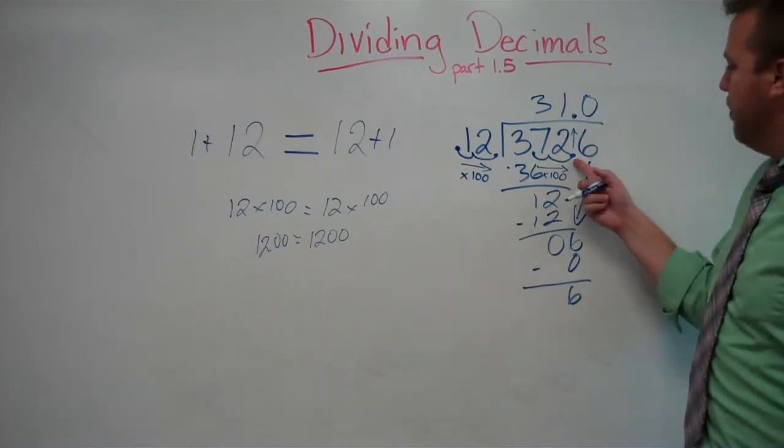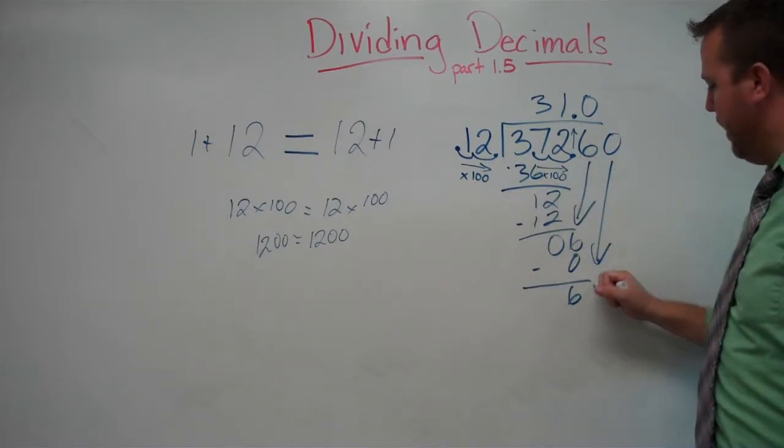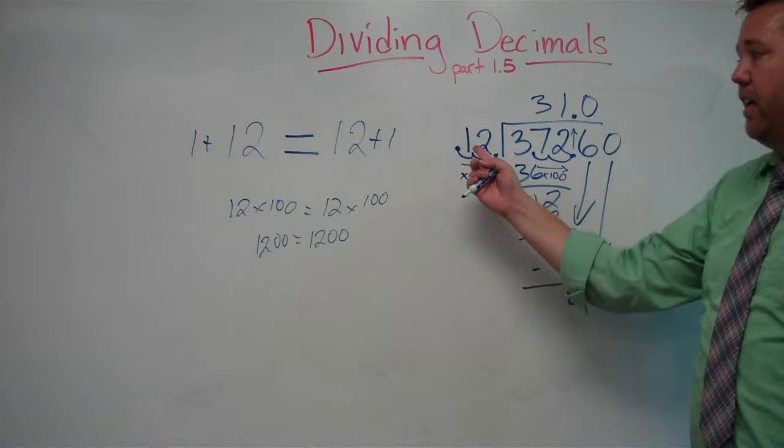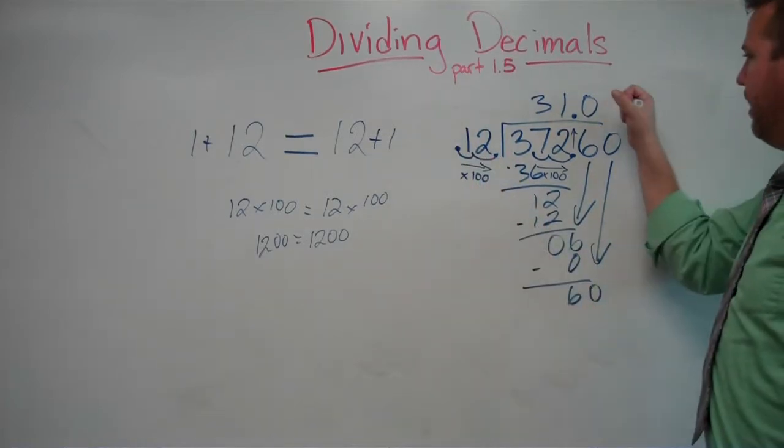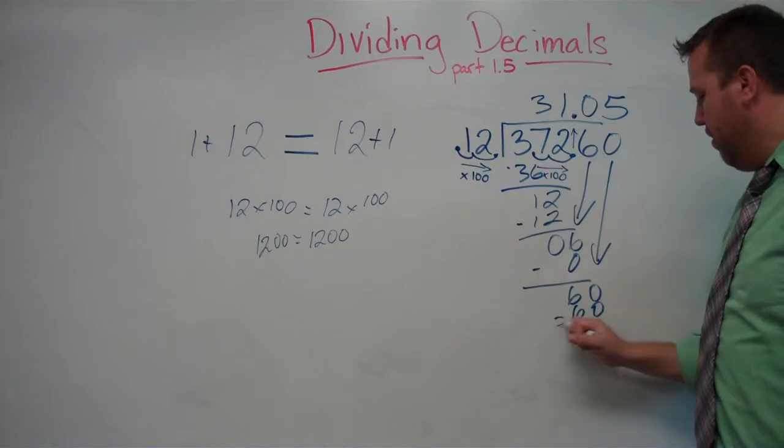Okay, then, because we're after the decimal, we can add that 0, bring it down, and then we repeat. 12 goes into 60 five times. And that's an even finish right there.